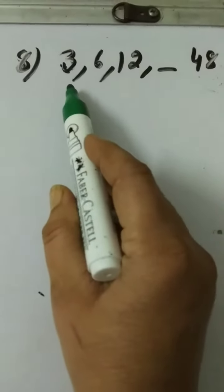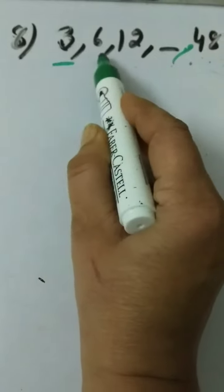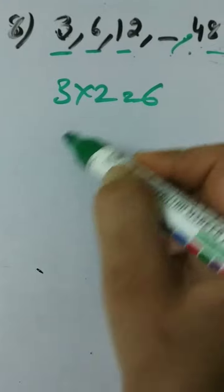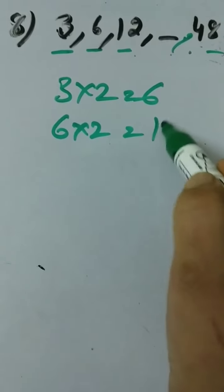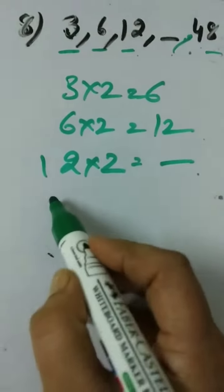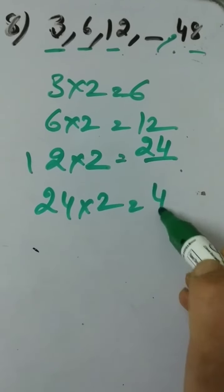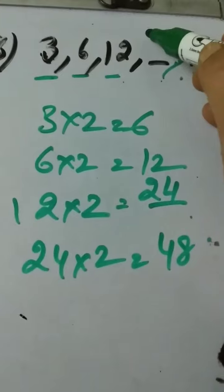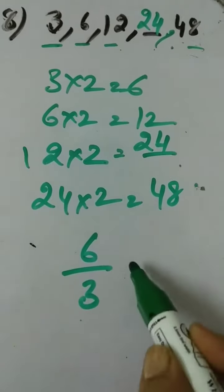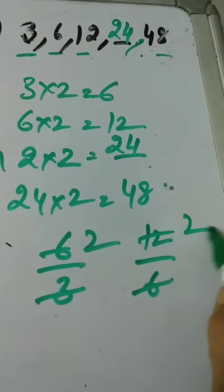Eighth fill up: 3, 6, 12, dash, 48. So in this sequence we multiply each digit with 2. 3 multiply 2 is 6. 6 multiply 2 is 12. Then dash is there—it means 12 multiply 2, what will be there? That is 24. 24 into 2 equals 48. So what will be the digit here? 24. Other method: you have to divide these numbers like this, then you come to know—12 divided by 6, like this.